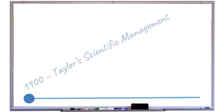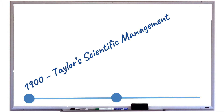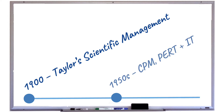The three milestones are: around 1900, Frederick Taylor's scientific management; the middle of the last century, the creation of several tools still used in project management, plus computers and the internet; and finally, most importantly, 1969 — when the Project Management Institute was created.